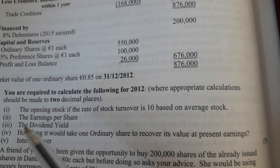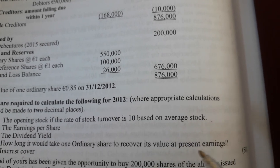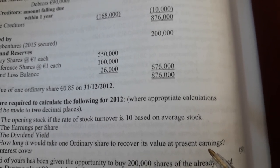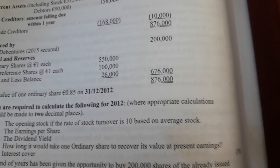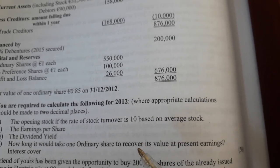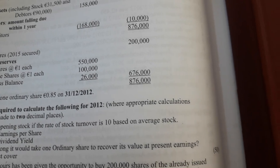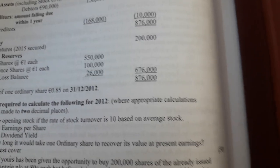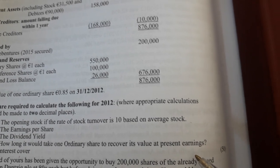We have two formulas for how long it would take an ordinary share to recover its value. One is at present earnings and uses the earnings per share ratio in the formula. The other one is at present payout rate and uses the dividend per share ratio. Since this one says at present earnings, it uses the earnings per share formula.